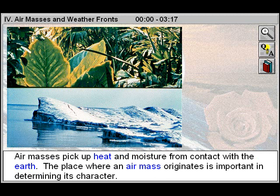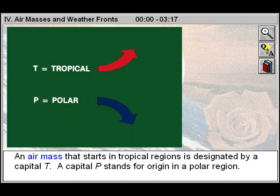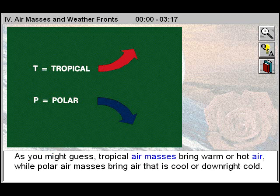Air masses pick up heat and moisture from contact with the Earth. The place where an air mass originates is important in determining its character. An air mass that starts in tropical regions is designated by a capital T. A capital P stands for origin in a polar region.